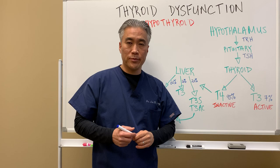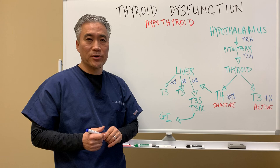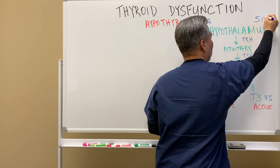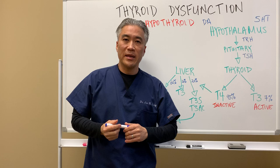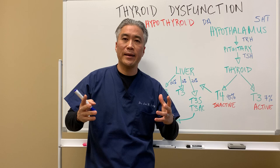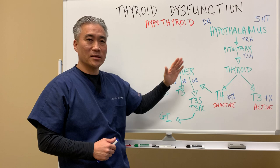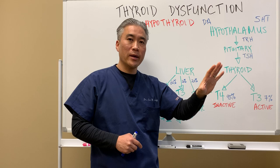Two key neurotransmitters also impact the hypothalamus: dopamine, associated with pleasure, and serotonin, associated with happiness and antidepressants. These neurotransmitters affect the brain and are part of the basic physiological process — from the brain to the thyroid, to the gut, to the liver, and back up as a feedback mechanism to the brain.